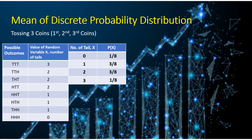Let's say we have the tossing of three coins and then we have the different possible outcomes. We have these eight possible outcomes for our event of tossing three coins at the same time. The value of our random variable x — we are concerned with the number of tails — so x represents the number of tails that may appear in tossing the three coins at the same time.